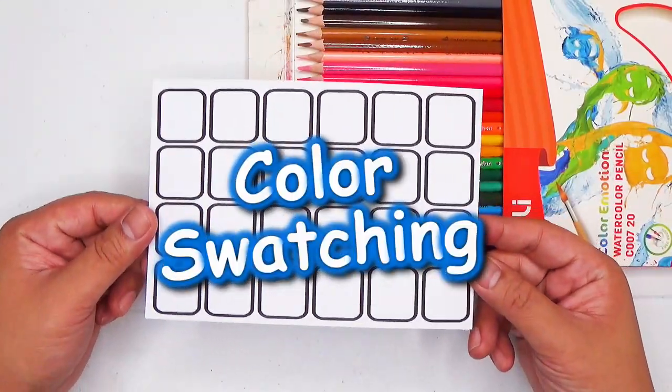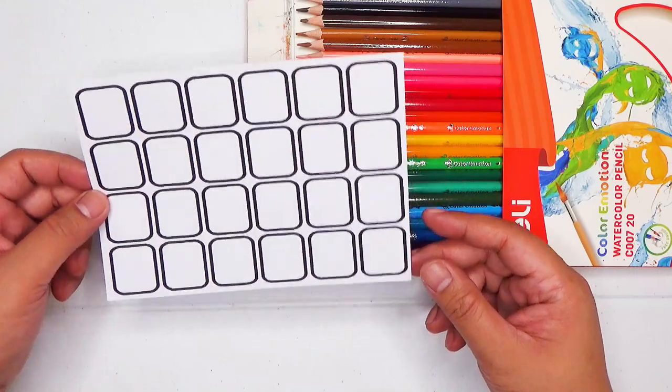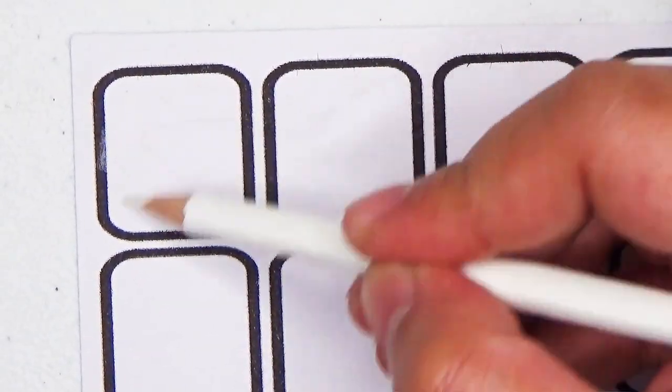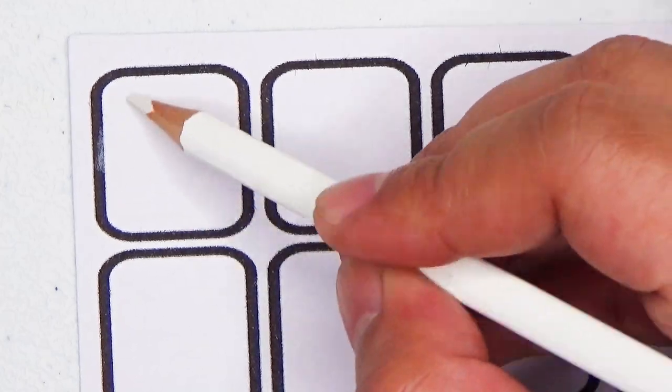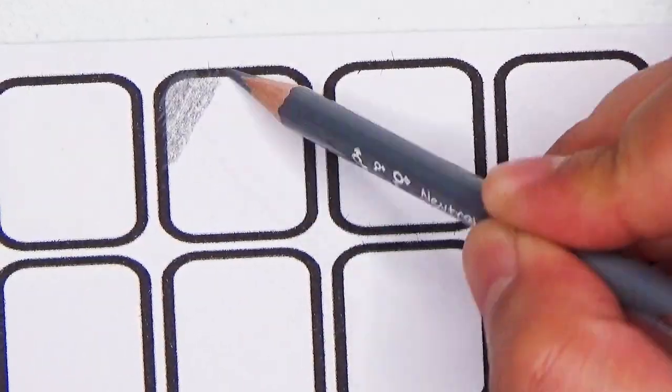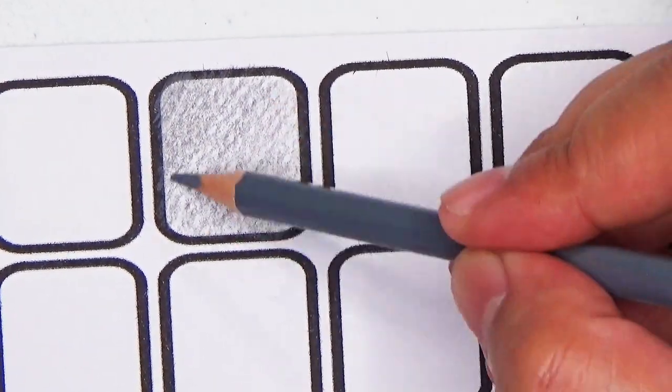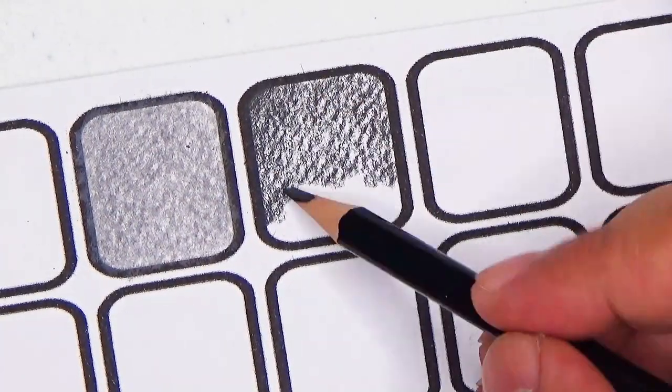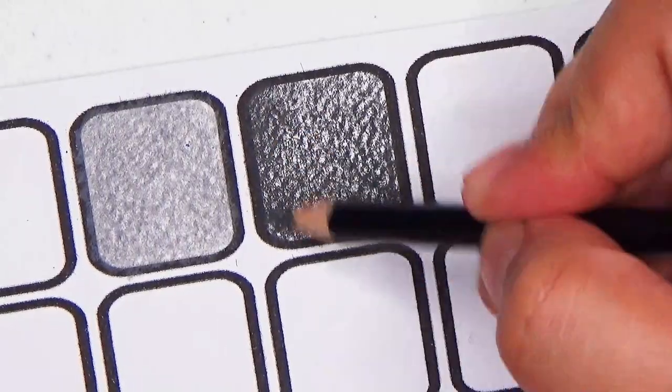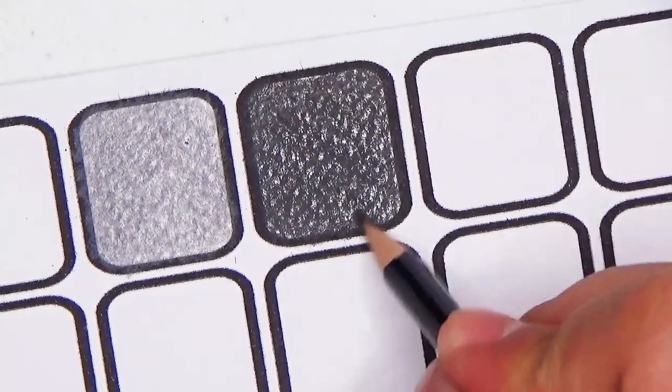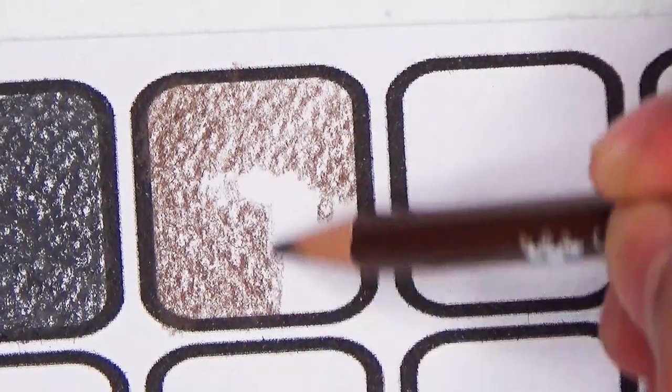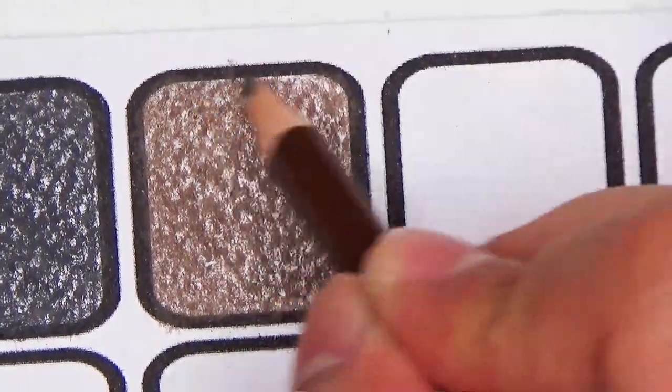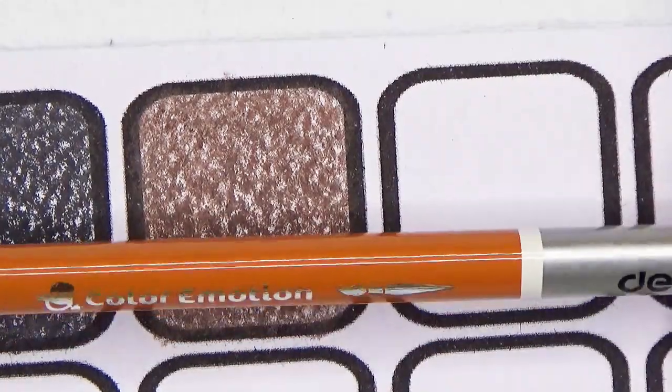Now let's get to my favorite part in unboxing, which is the swatching, where we will get a feel of how this product really performs. As always, whenever I make a swatch sheet, I use textured paper, or heavily textured paper for that matter, and this is to test the coverage of the pencils and how well it would lay out on paper. I'm also putting in about three to four layers to emulate how I would normally use colored pencils, and also to test how much layers can these colored pencils take.